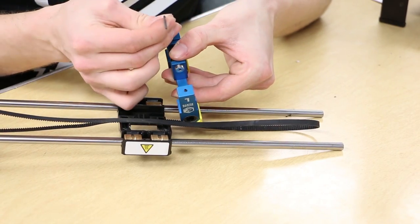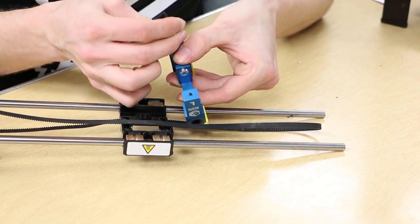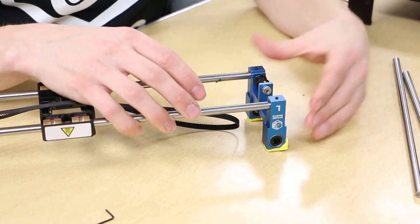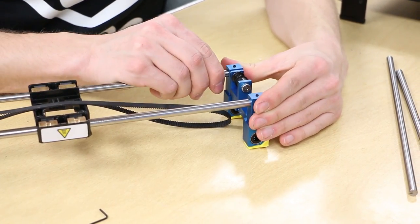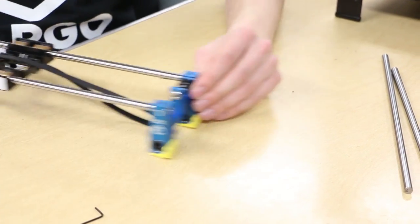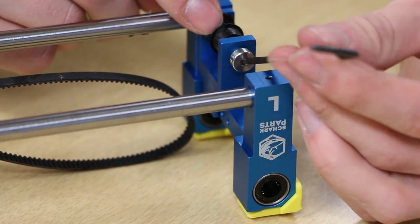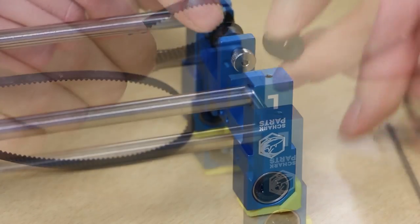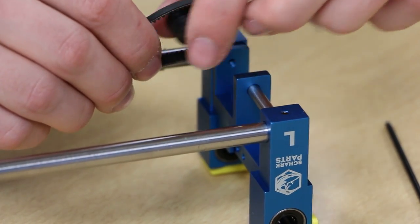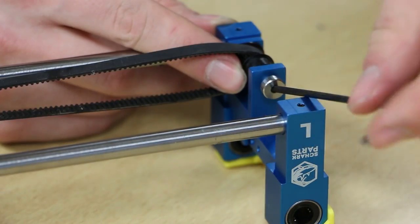Take the L linear bracket and loosen its bottom set screws. Slide the X-axis rods into place by flushing the ends of the rods to the outside of the linear bracket. Retighten the set screws. Loosen the shoulder bolt and slide the belt into place as shown. You can add some Loctite to the shoulder bolt threads if desired. Retighten the shoulder bolt.